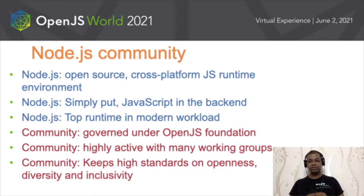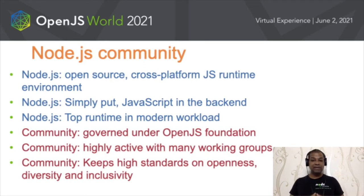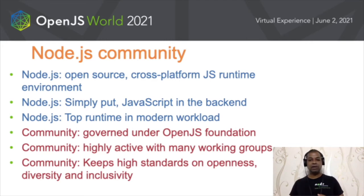Here is a short introduction around the Node.js project and the community. Node.js is an open source cross-platform JavaScript runtime. V8 is also an open source cross-platform JavaScript runtime — the key difference is that Node.js is customized for optimally running in the backend, as opposed to running in the browser. That specificity makes it one of the favorite runtimes for hosting modern workloads in the backend, including cloud, analytics, AI, mobile, and IoT.